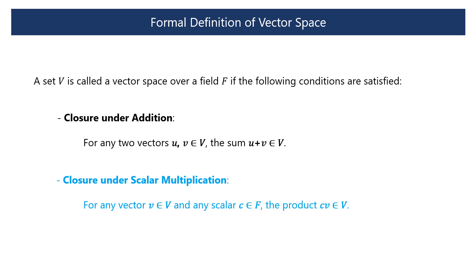The second is closure under scalar multiplication. For any vector v in a vector space V and any scalar c in the field F, the product of c and v belongs to the vector space V. The result of multiplying a vector by a scalar in a vector space always falls within that vector space. The scalar can be real numbers or complex numbers. In other words, a vector space is a place where you can freely add vectors and multiply them by scalars, and the results will always fit within that space.